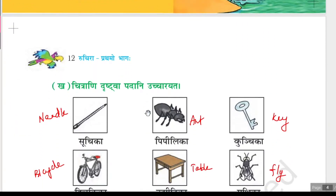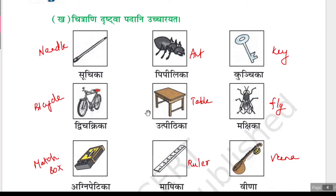Now we will see the second question: Chitraani drishtuva padani uccharayata. They gave pictures and on seeing the pictures we have to do the pronunciation. This picture says needle, so the word is Suchika. The meanings are not needed here, just Suchika.